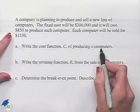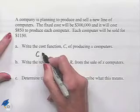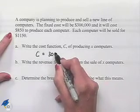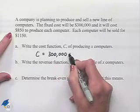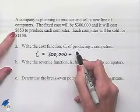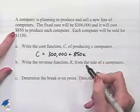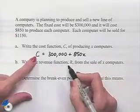Since x stands for the number of computers that we'll be producing, we can write C equals our fixed cost of $300,000 plus our variable cost of $850 multiplied times the number of computers.